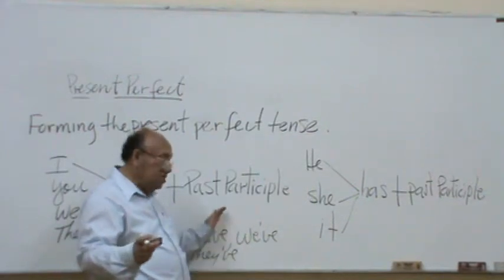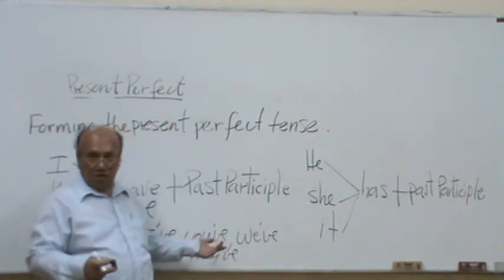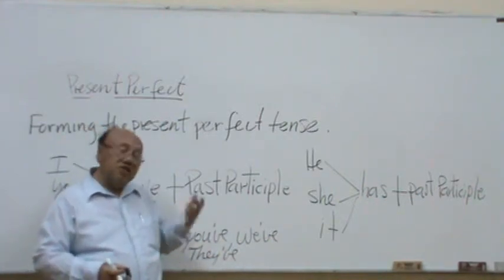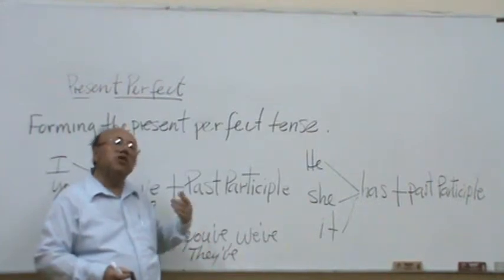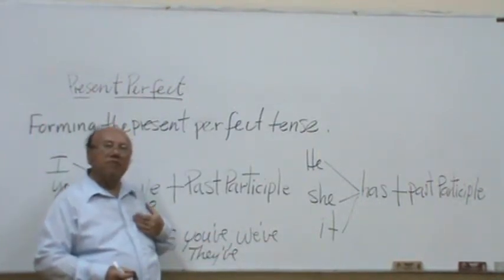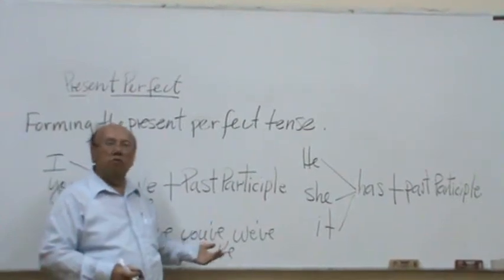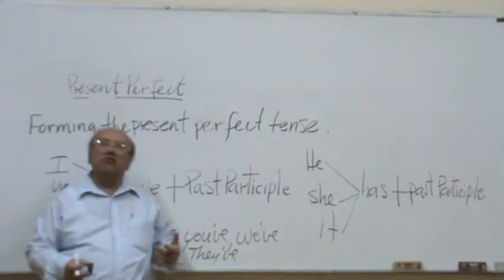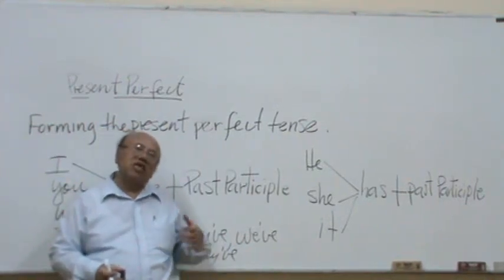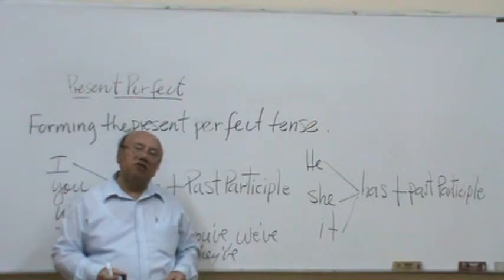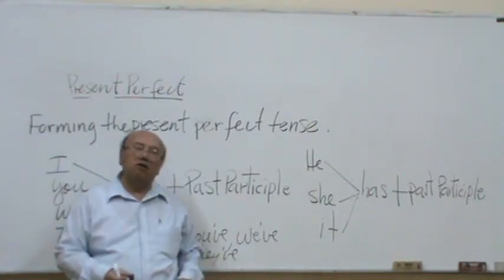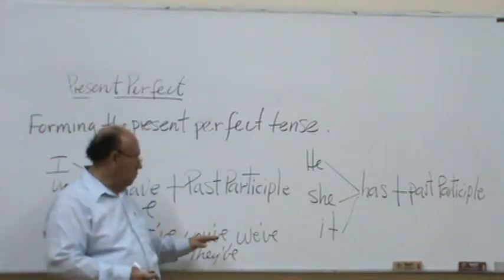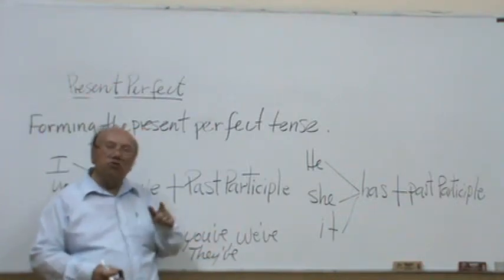But this is more usable in conversation than in written form. In written form, we use we have or I have. In written form or formal English. Also, in reading technical books, scientific readings or scientific writing. Now, you have to pay attention to this. For conversation, use the contractions.